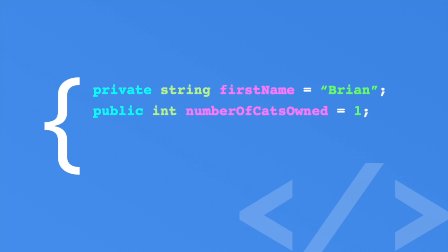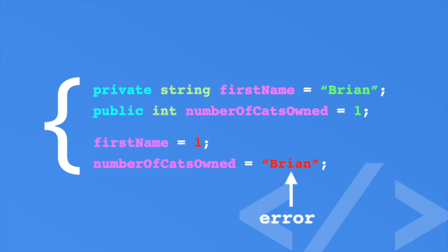For instance, we can't divide or multiply the first name, nor can we uppercase the number of cats owned. Our code editor will report an error if we try. When you assign a variable type, you can never change that type. So you can't assign a number to a string or vice versa. A string is always a string, and an int is always an int. You can convert between types, but we'll cover that in a later episode.